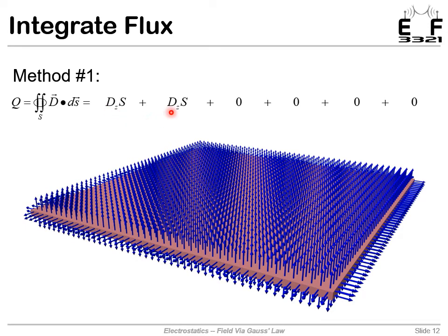And so really, we just have answers for those first two integrals. D_z s, d_z s for both. And the rest were all just zeros. So in the end, the total charge is two times the z component of d times the area s. And this was very easy because we exploited symmetry.